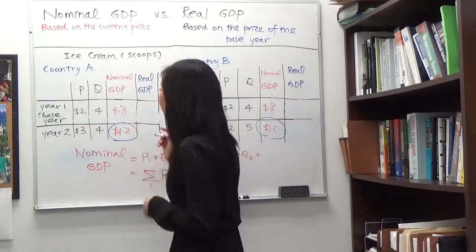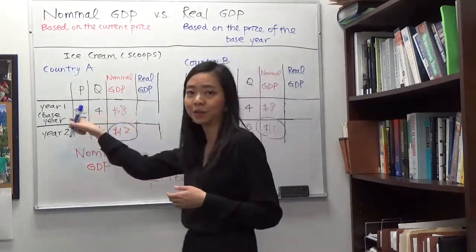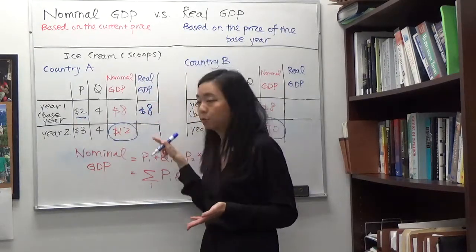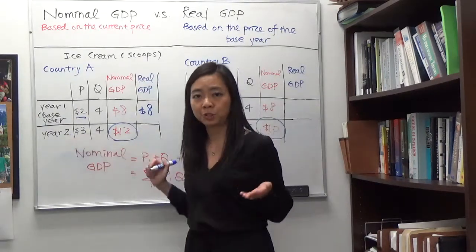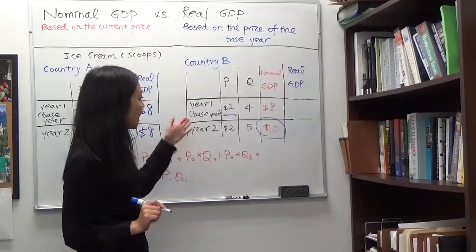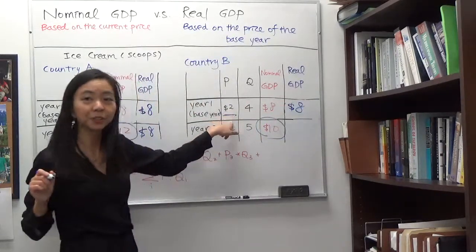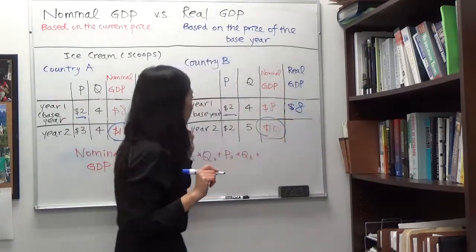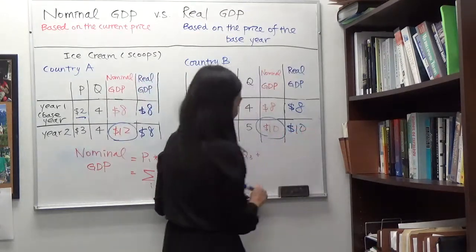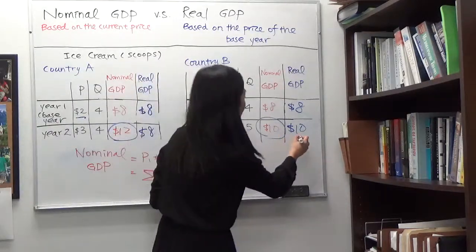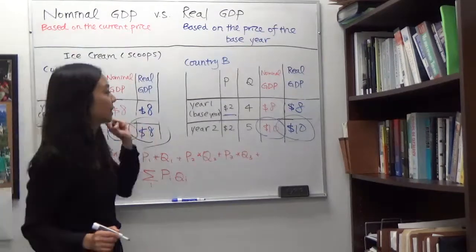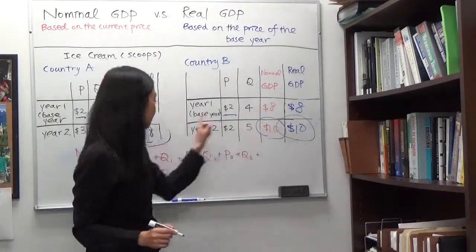Using year one as the base year, we calculate real GDP using year one prices. In country A, real GDP in year one is still two times four — eight — because that's the base year. Real GDP in year two for country A is also two times four, giving you eight, since we use the base year price. For country B, real GDP in year one is eight. In year two, we use the base year price of two dollars times five scoops, giving ten dollars. Comparing real GDP in year two: country B's ten is higher than country A's eight. Since we fixed the price, we can clearly see that country B really does better than country A.